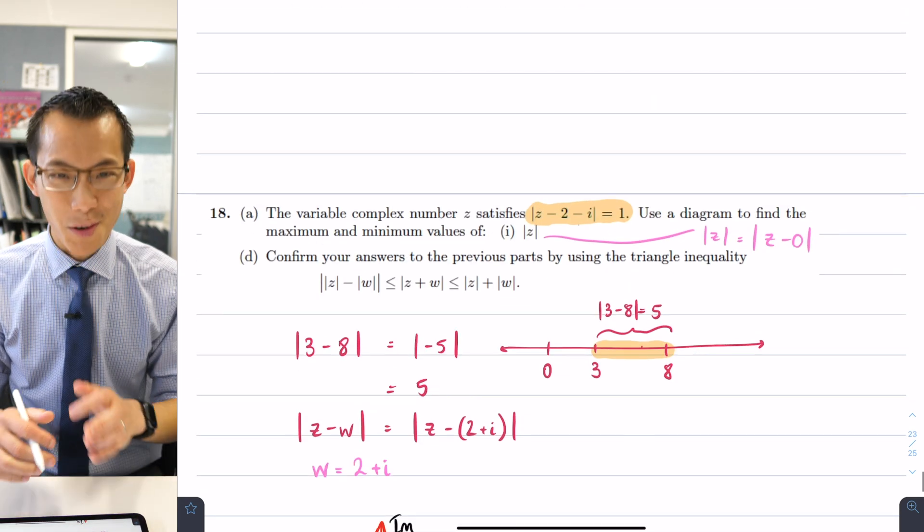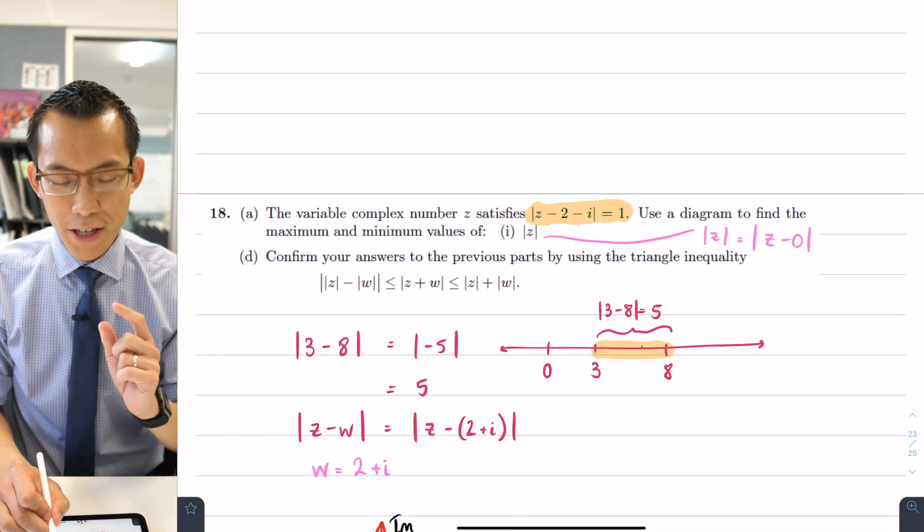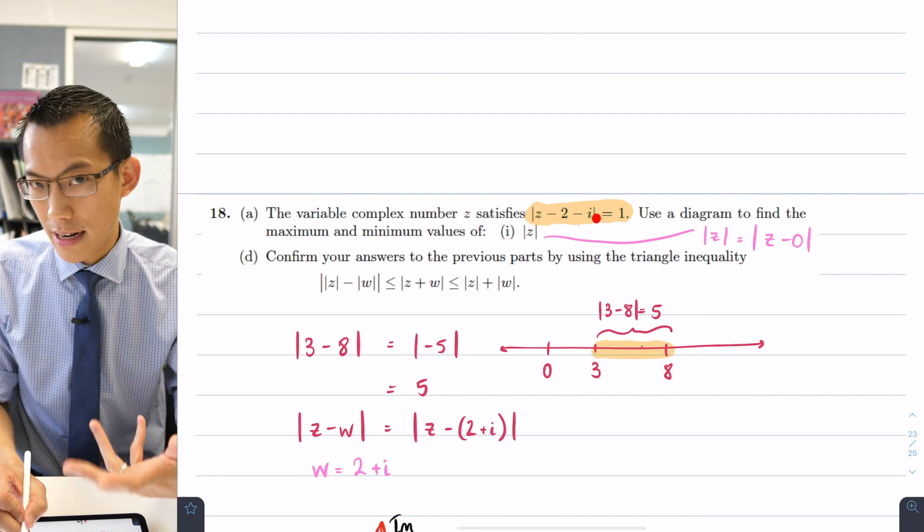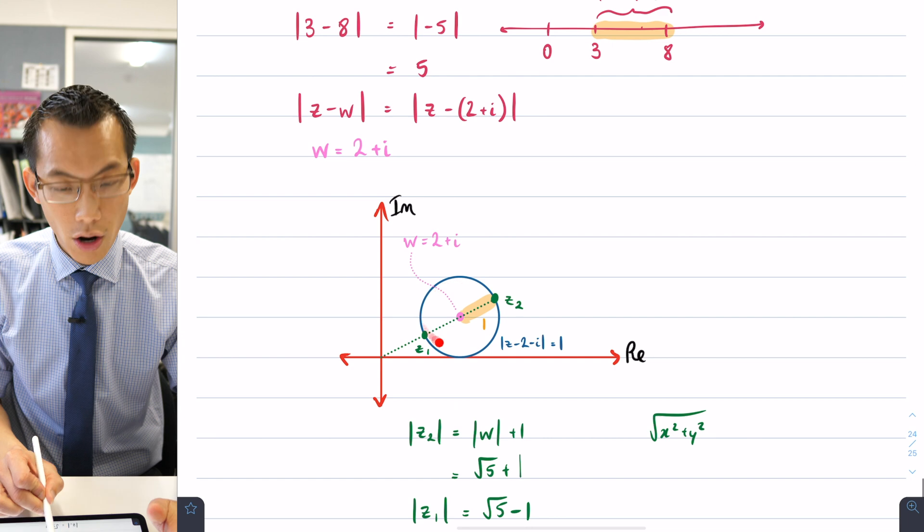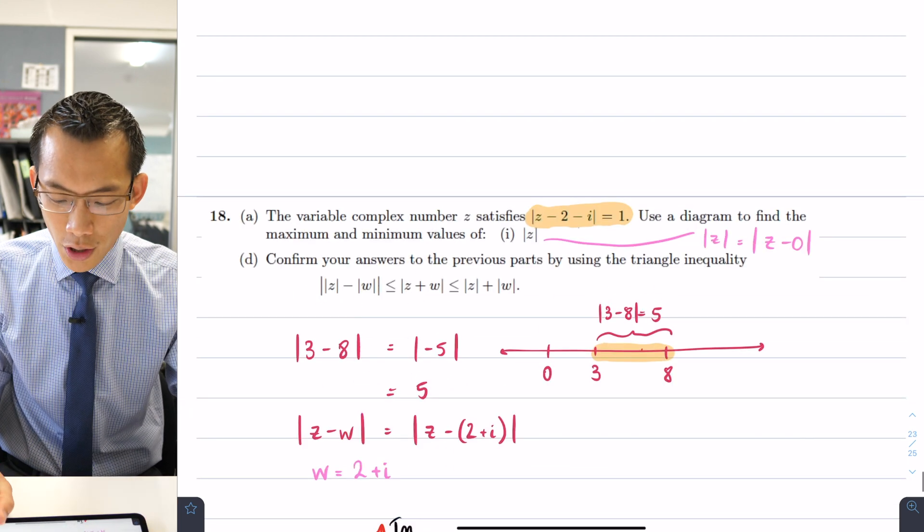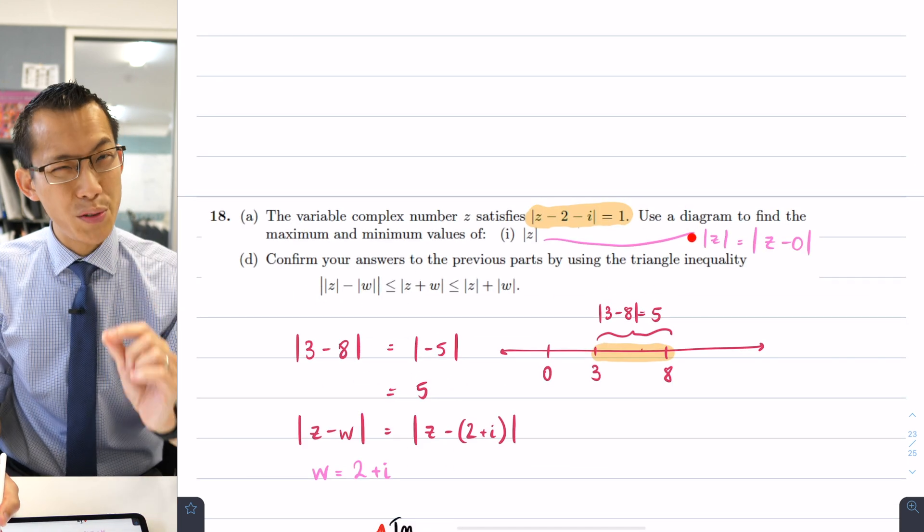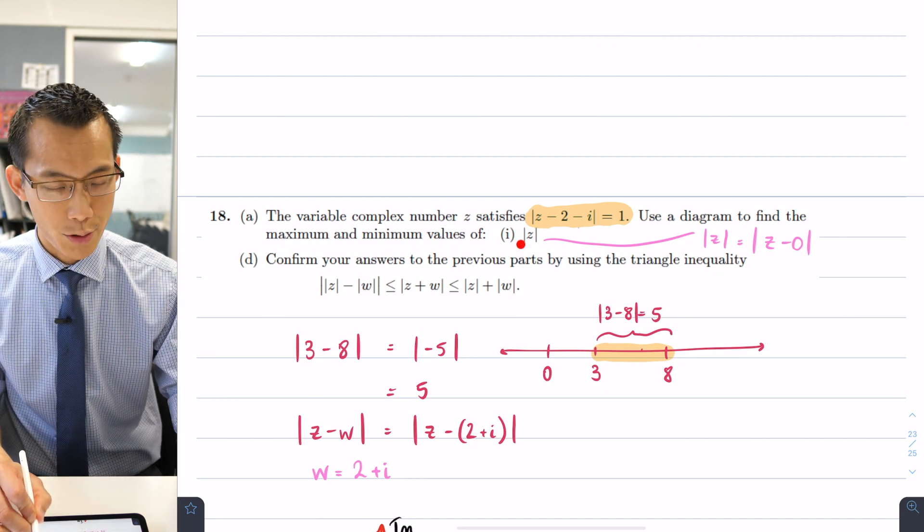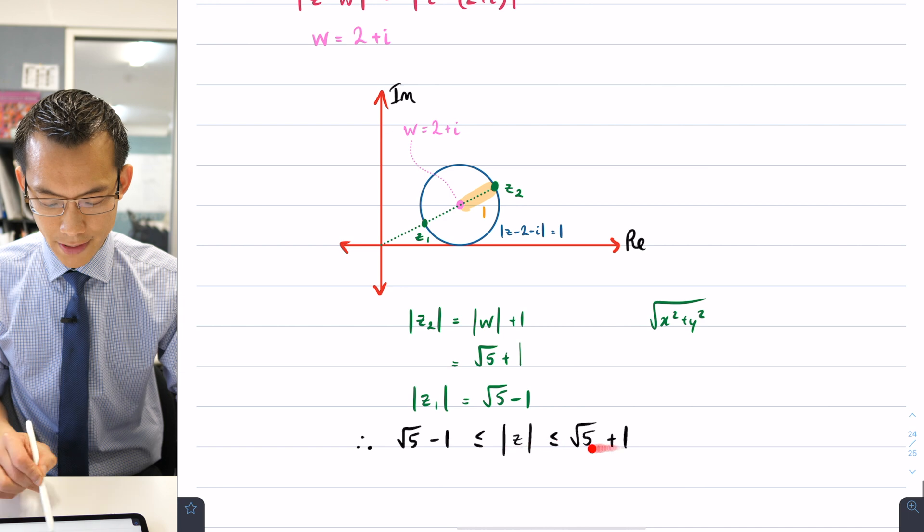So, take a breath. What have we done so far? We have, for this particular complex number z which satisfies this equation, since it satisfies that equation it has to sit somewhere on this circumference. We have gone and created the diagram and then we've used that to find the maximum values of the modulus of z. So I've got them down here.